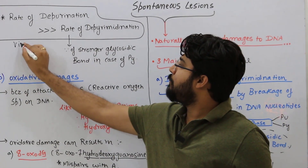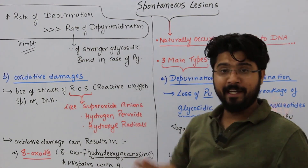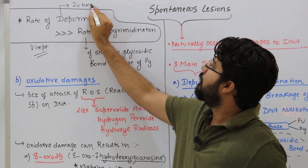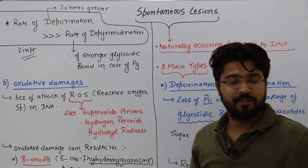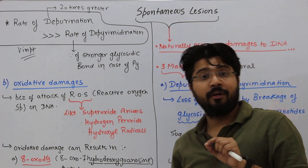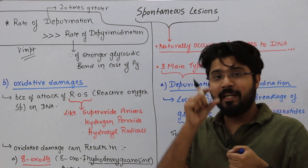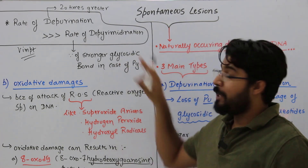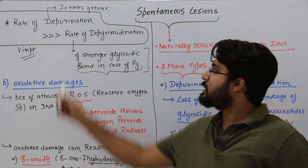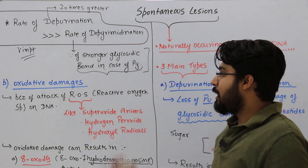An important point for examinations: the rate of depurination is very high compared to depyrimidination — approximately 20 times greater. The reason is that the glycosidic bond in pyrimidines is much stronger than in purines. Therefore, less energy is required to remove a purine naturally, making purine removal much faster than pyrimidine removal.